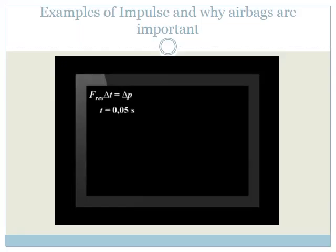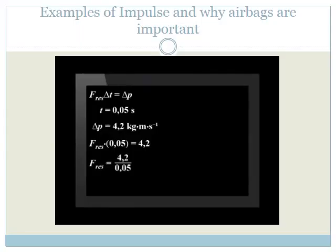Time equals 0.05 seconds, and change in momentum is 4.2 kilogram meters per second. So resultant force times 0.05 seconds equals 4.2. If we manipulate the formula, we see resultant force equals 4.2 divided by 0.05, which means resultant force equals 84 newtons towards the wall.